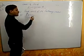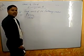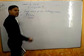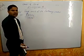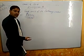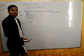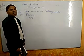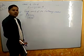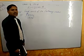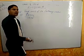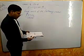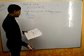Students, jab bhi aap multiply karenge, jab 1s place mein 0 ho, to jo numbers hain un numbers ko multiply kijiye aur 0 ko right side mein put kar dijiye — yeh aapka answer hoga. (Whenever you multiply and there is a 0 in the 1s place, multiply those numbers and put the 0 on the right side — that will be your answer.)